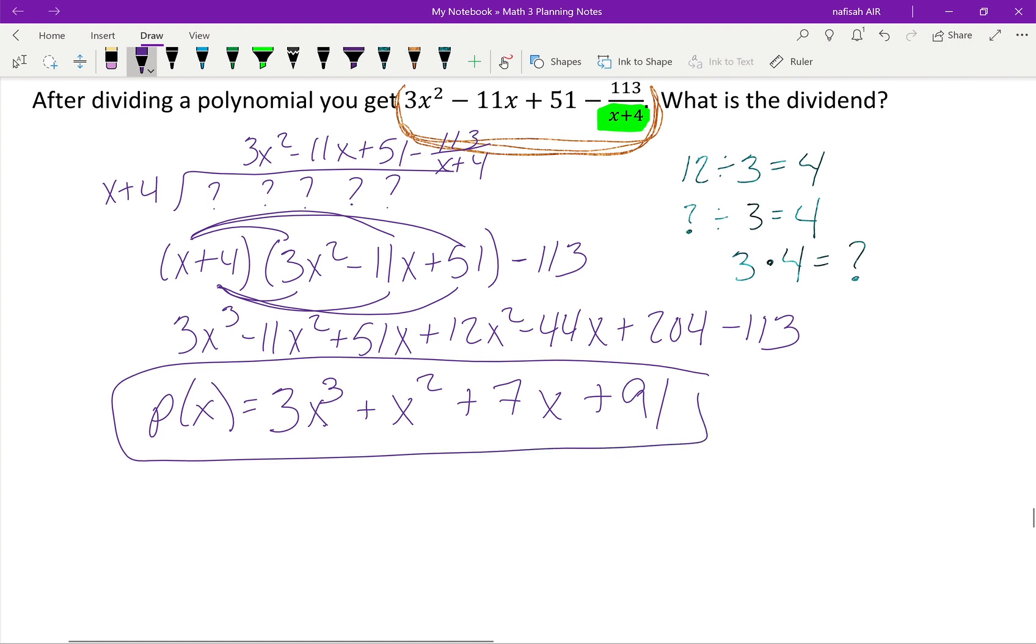I could check it - I could take x + 4 and divide it into 3x³ + x² + 7x + 91. I can only hope that once I do all of that work, I get a remainder of 113 and the correct quotient.